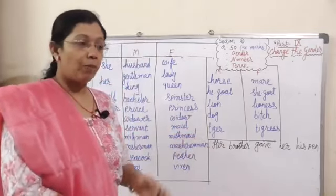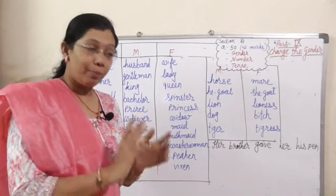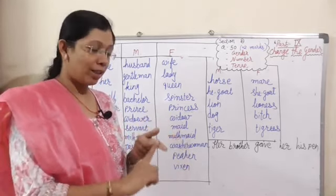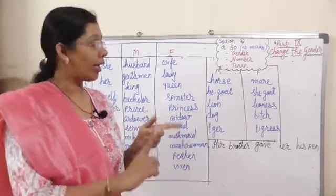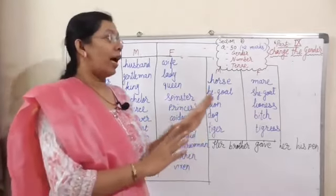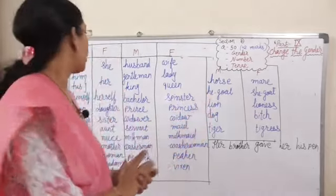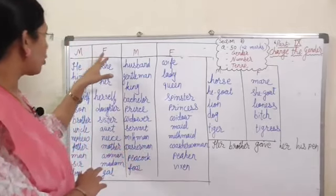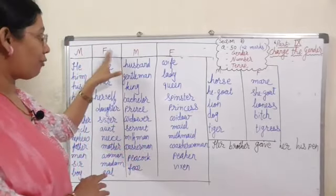Basically, mainly there are two genders: masculine gender and feminine gender. In the exam, we have to remember both genders. Masculine gender is marked as M, and feminine gender is marked as F.